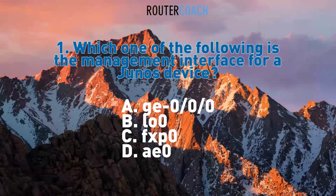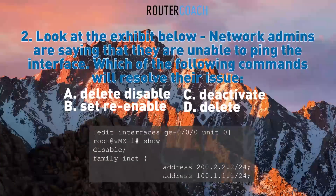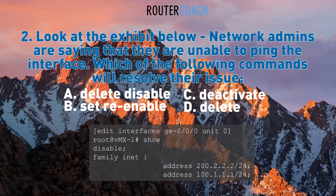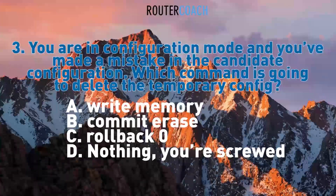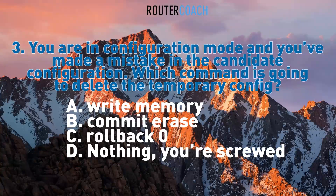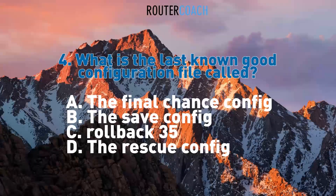Question one: which of the following is the management interface for a JunOS device? Question two: network admins say they are unable to ping the interface — which of the following commands will resolve their issue? Question three: you are in configuration mode and have made a mistake in the candidate configuration — which command will delete the temporary config? Question four: what is the last known good configuration file called?